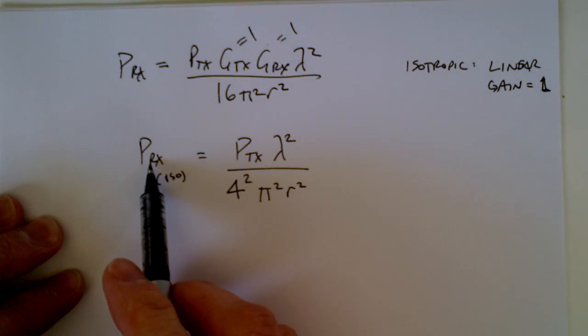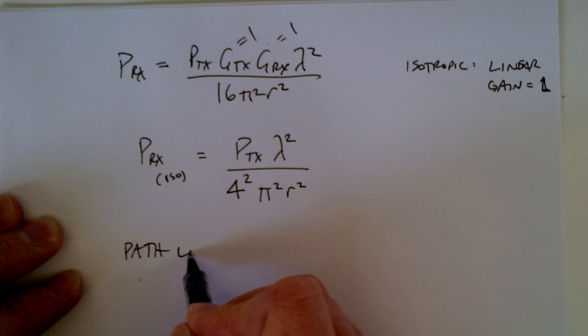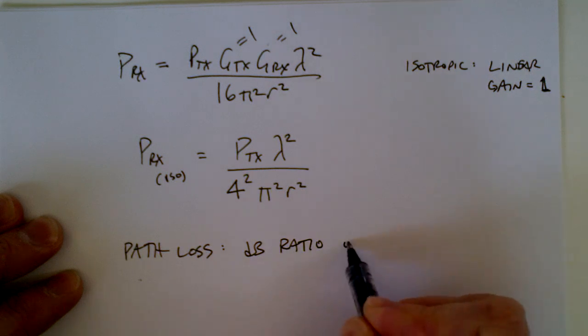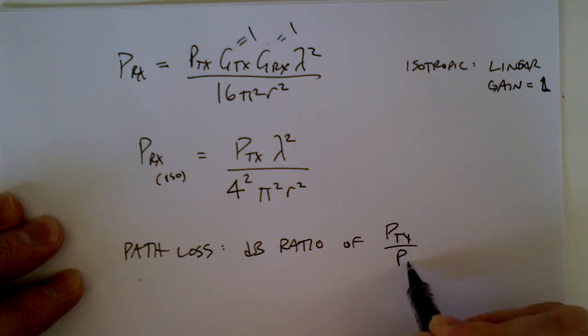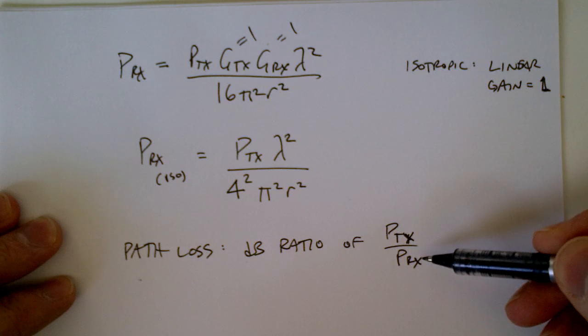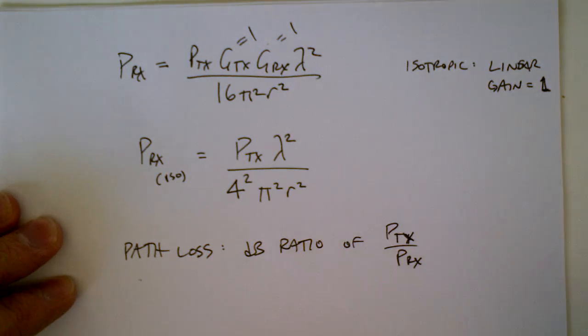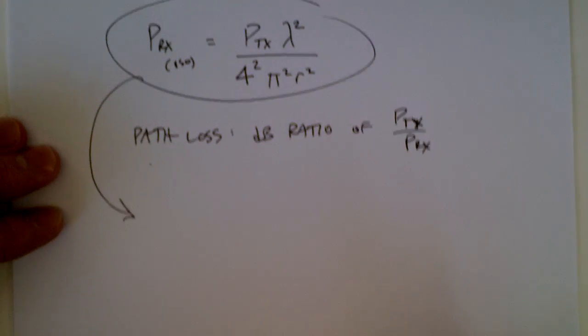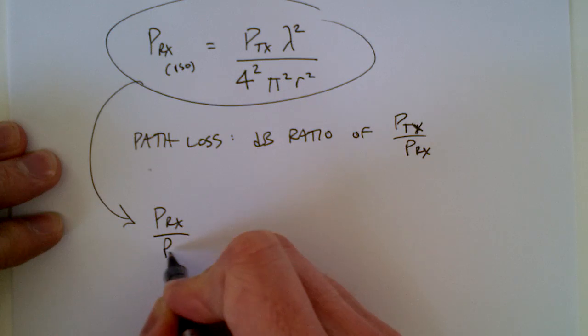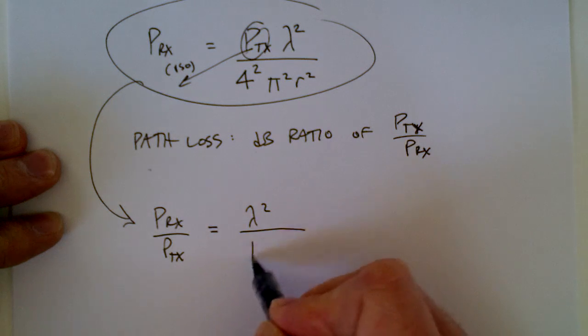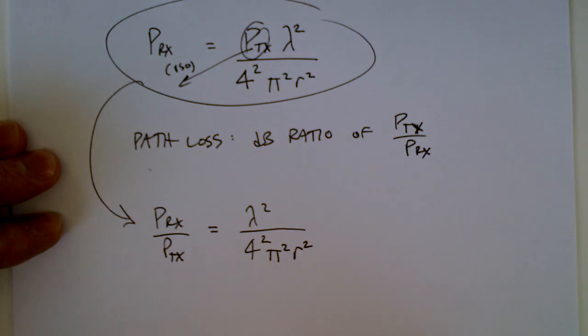Now that's power received, but path loss is usually the dB ratio of transmit power to receive power. So if the path loss is 10 dB, that means transmit power is 10 dB more than receive power, which means transmit power is 10 times more than receive power. So if we say pRx over pTx, then I'm just taking this and moving it down there. Lambda squared over 4 squared, pi squared, r squared.